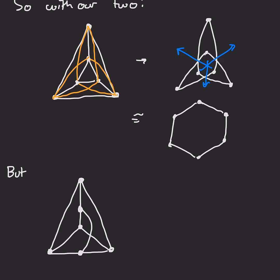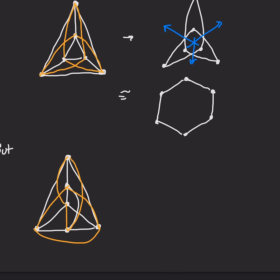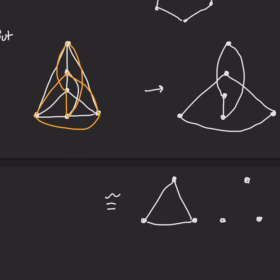But let's do the same thing with the other one. So we get these weird shapes, but actually there are two disconnected ones. That's isomorphic to two triangles.